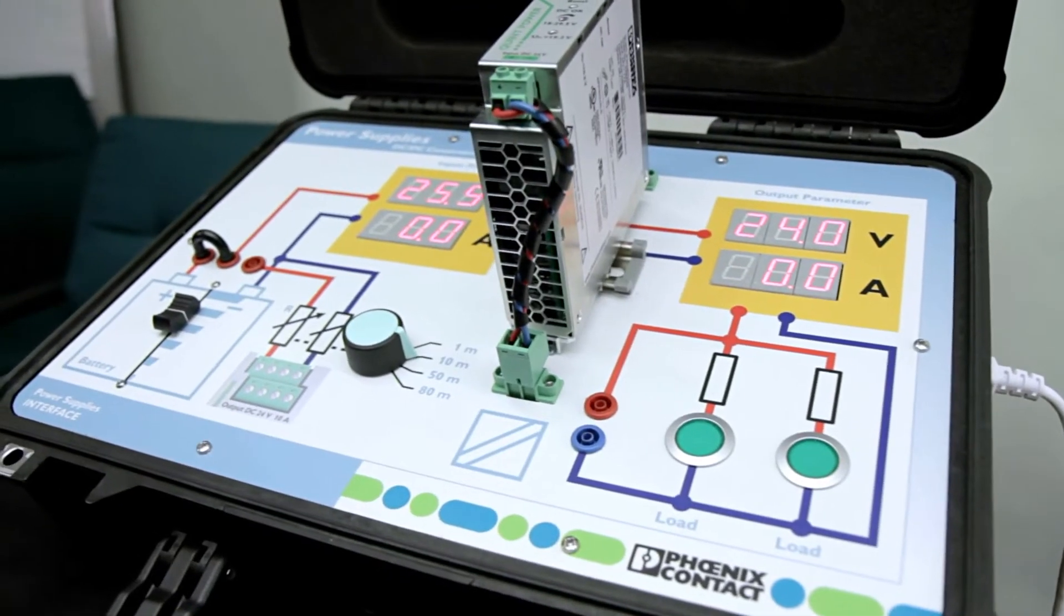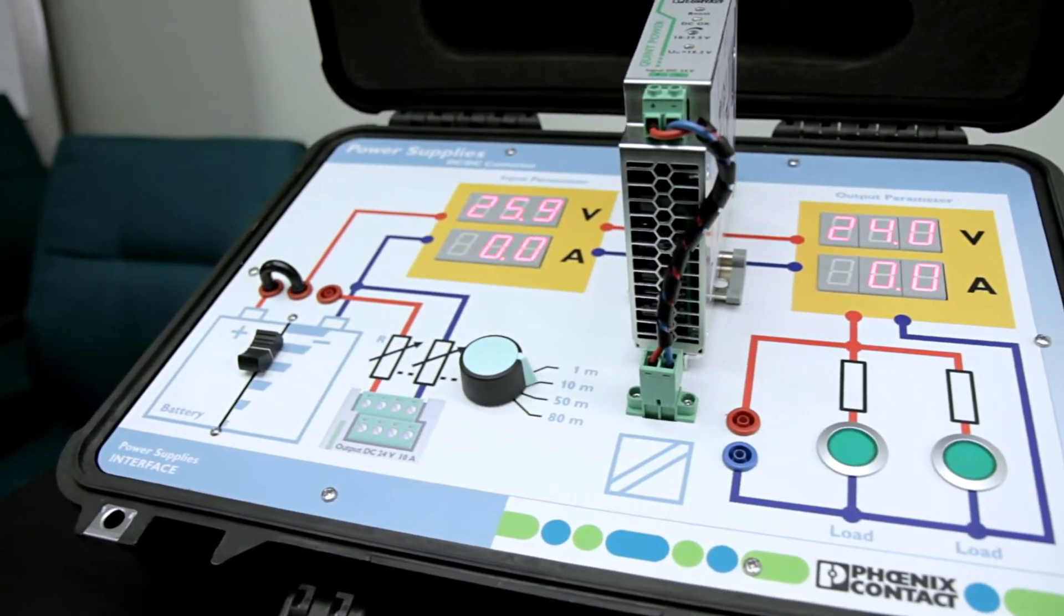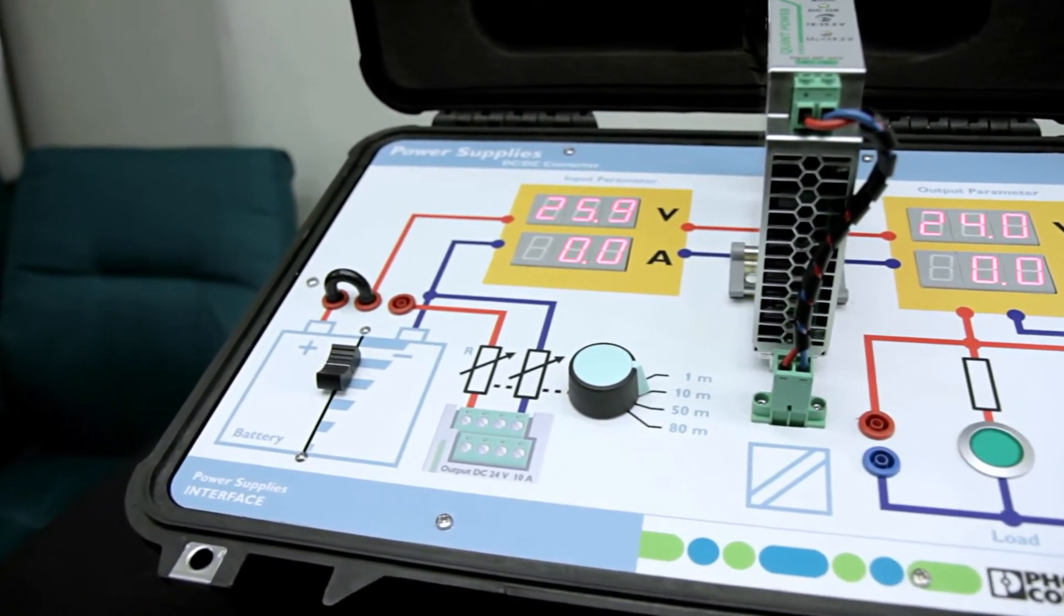This demonstration will highlight the key aspects of the DC to DC converter: converting, amplifying, isolating, regulating, and monitoring.